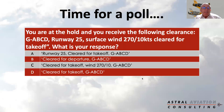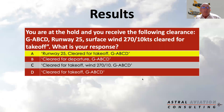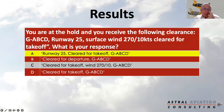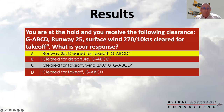So let's see what the correct answer was. It was indeed Runway 25, cleared for takeoff, Golf Alpha Bravo Charlie Delta. As we can see, most of you have got it correct — 68%. Basically, anything to do with numbers that doesn't involve the weather, you have to read back. Obviously the takeoff clearance you also have to read back. And your full call sign, because that's what ATC calls you, so you reply with your full call sign.